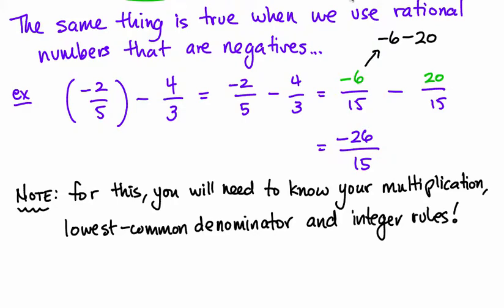You really need to know your multiplication. So, you can do these ones. I showed you a table method, or I can show you a table method in class for finding lowest common denominators. And you also need to know your integer rules, as I showed you in the black for this question here. Let's take a look at three more examples.